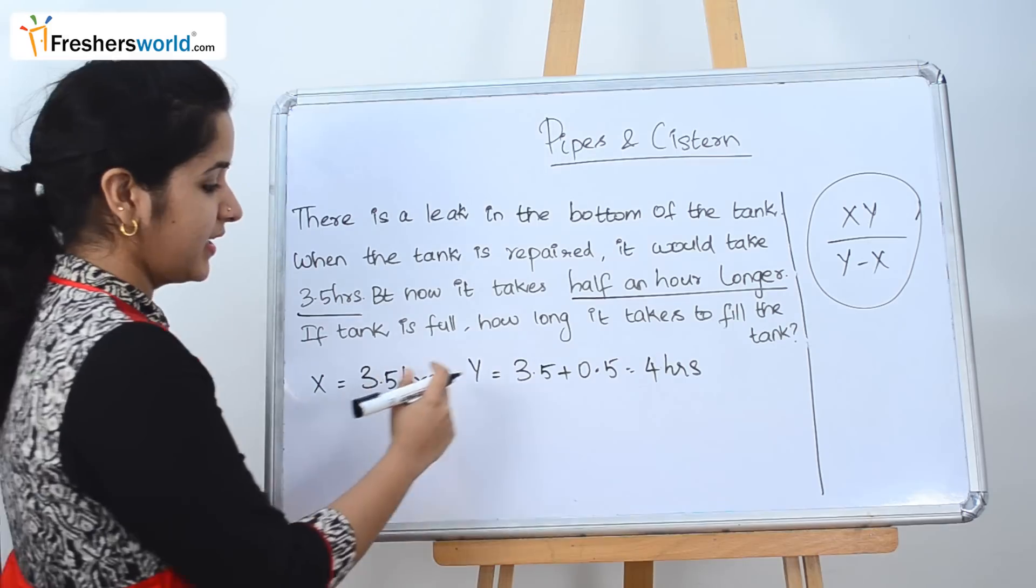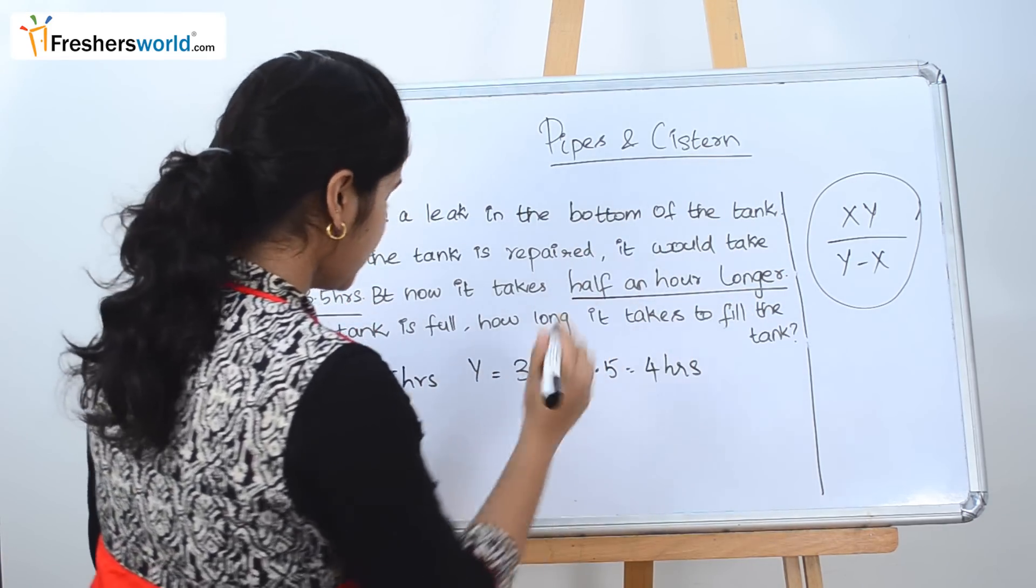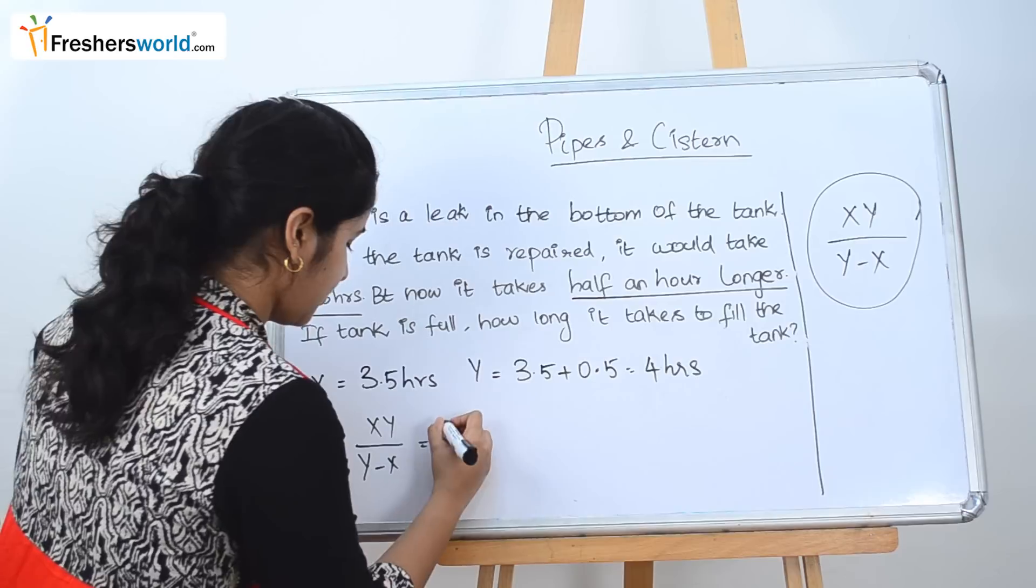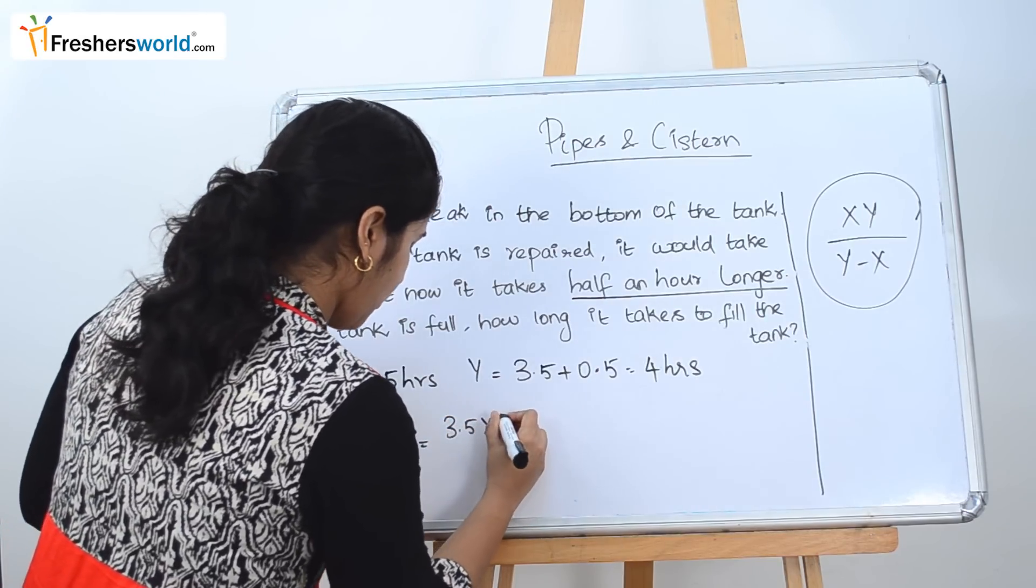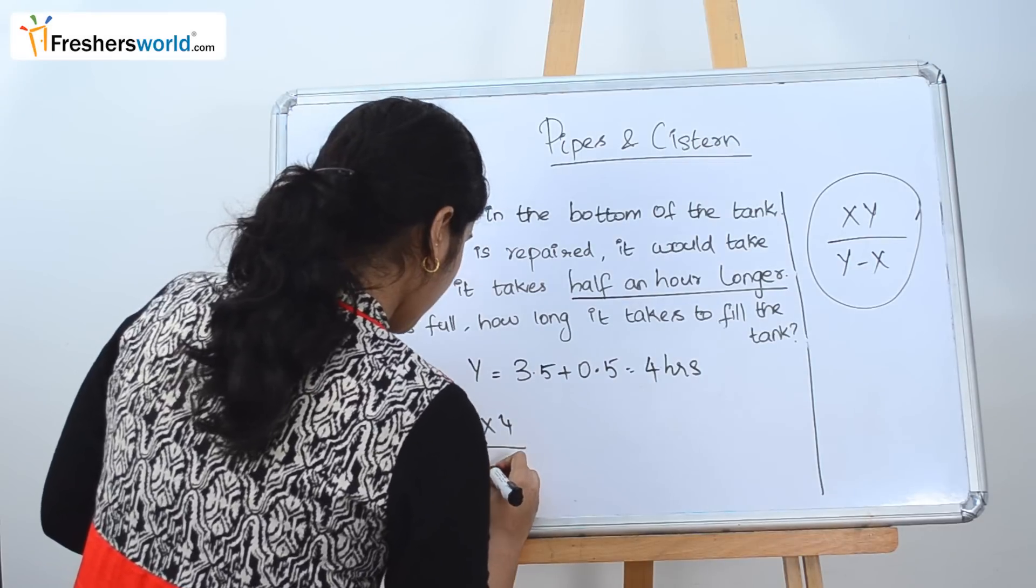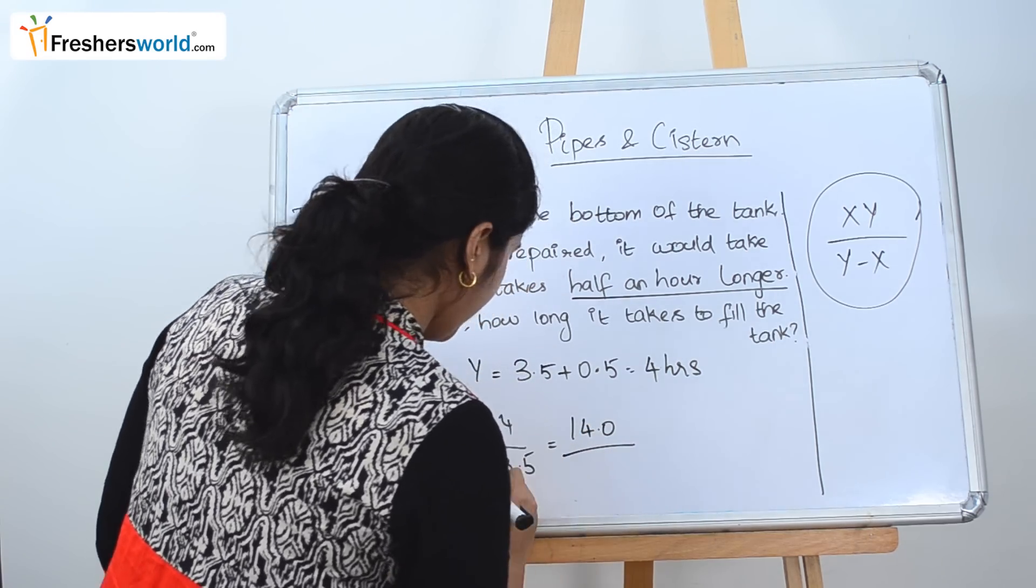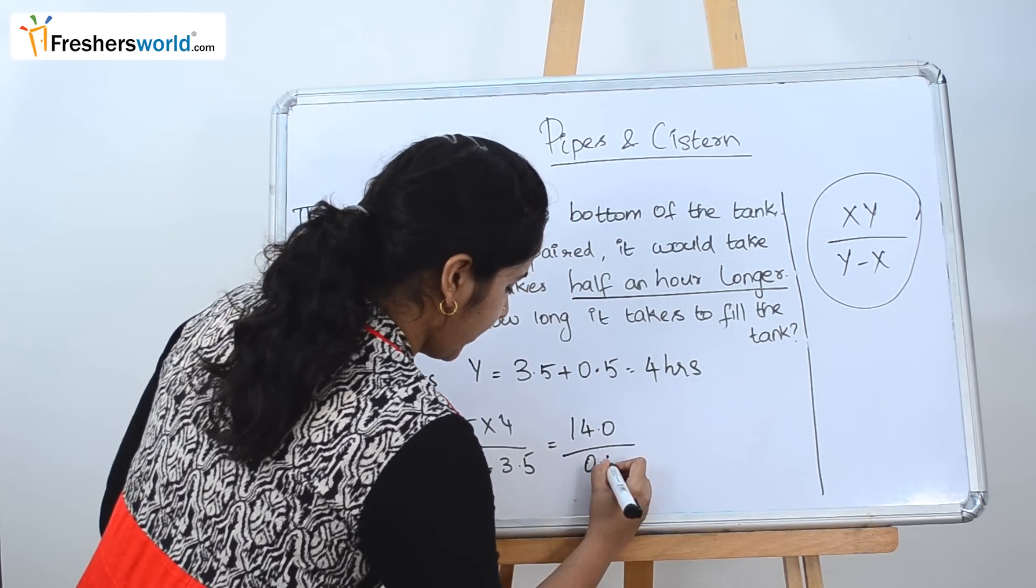So we know X and now we know Y. So we have to use it in the formula: XY by Y minus X. So 3.5 into 4 divided by 4 minus 3.5. 14.0 divided by 4 minus 3.5 is 0.5.